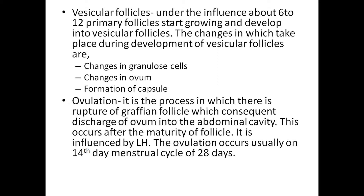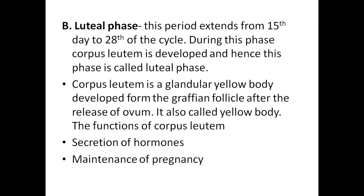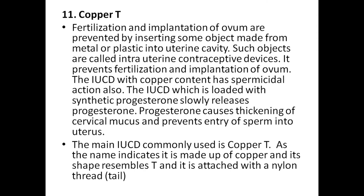Ovulation is influenced by LH and usually occurs on the 14th day of a 28-day menstrual cycle. The second phase is the luteal phase, extending from the 15th to 28th day of the cycle. Corpus luteum is the granular yellow body developed from the Graafian follicle after the release of the ovum. It is also called the yellow body, and its functions include secretion of hormones and maintenance of pregnancy.